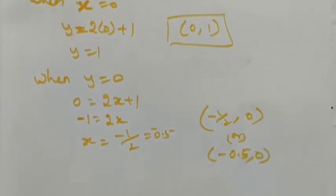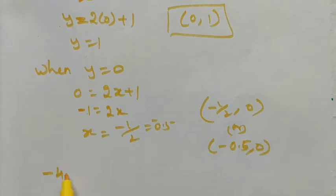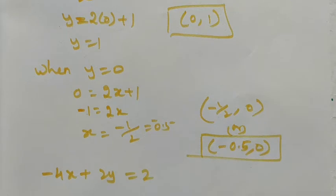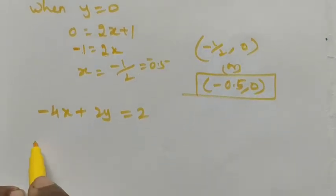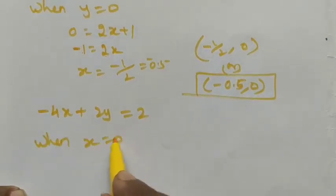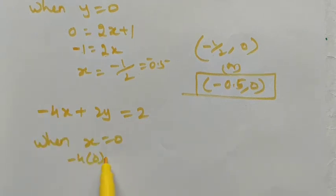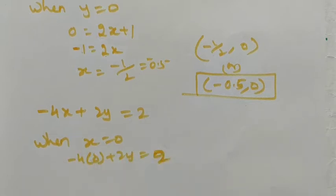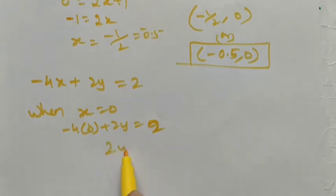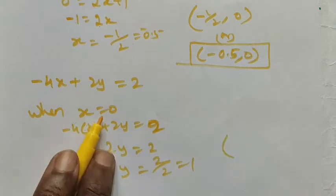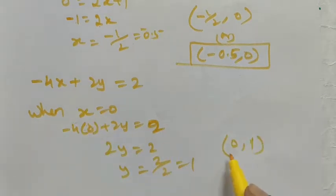Now for equation 2: minus 4x plus 2y equals 2. Using the same format, when x equals 0, substituting: minus 4 into 0 plus 2y equals 2. The x term becomes 0, so 2y equals 2, giving y equals 1. The ordered pair for equation 2 is (0, 1).